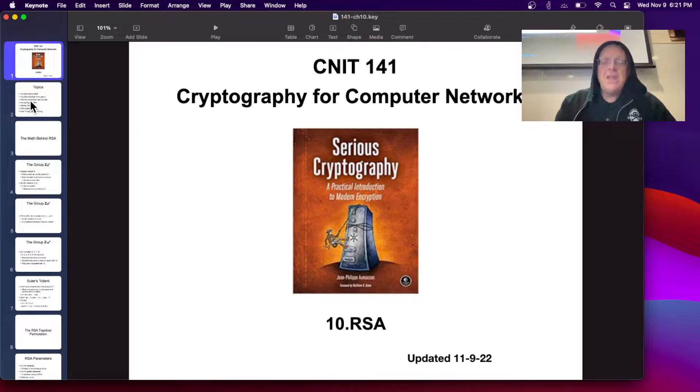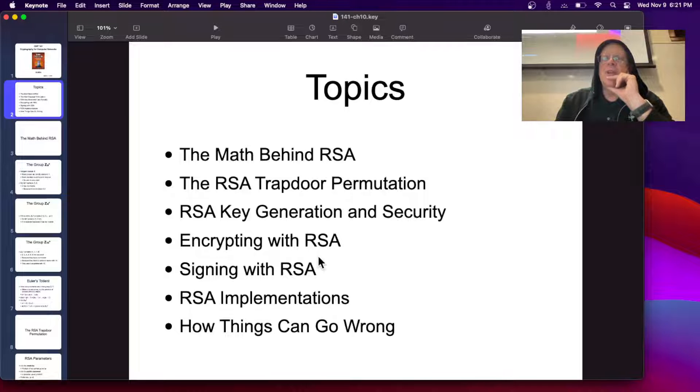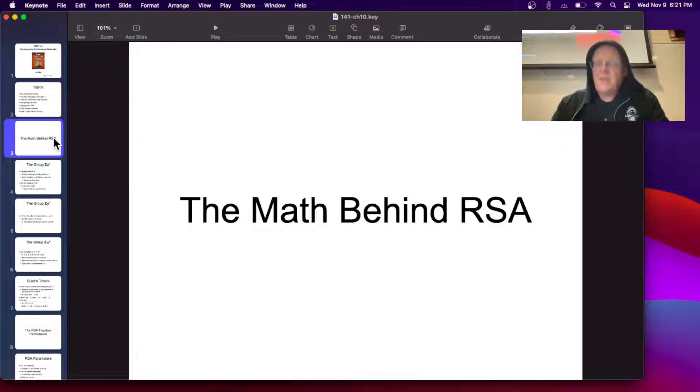RSA. This was the original public key cryptography system that changed the world. So we'll talk about the math behind it and how you encrypt and how you sign and then how things can go wrong. So the math is very simple. It's one of the many great things about RSA. It's not very complicated. It's pretty easy to understand, and it is the basis of what most of us are using for public key encryption even still.